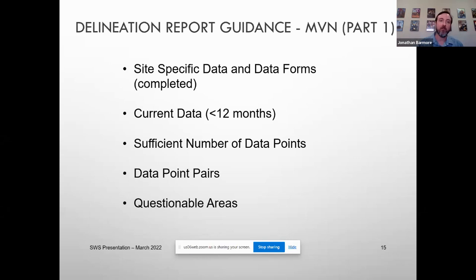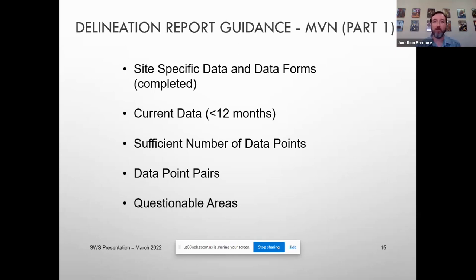What do we need in the report? We need site-specific data and data forms — and please complete the data forms. I know there are lots of questions and little boxes. A perfect example: I get a lot of forms from people where the hydrology section has nothing checked and they just move on to the next page, because in their head they don't see any signs of hydrology and they don't feel it's a wetland. That's fine, but I don't know if you didn't see any signs of hydrology or you just forgot to fill it out. At least put something in there: 'reviewed the site, did not find signs of hydrology.' That's all I need. So please complete the forms.